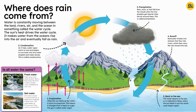Is all water the same? Fresh water is the water we drink. Rain is fresh water. We find it in lakes, streams, rivers, underground, and in ice.